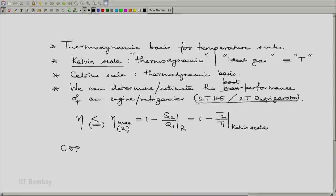Similarly, the coefficient of performance of any refrigerator based on the 2T refrigerator is going to be less than or in the thermodynamic limit equal to the COP maximum, which for a reversible refrigerator equals Q2 by W, which is Q2 divided by Q1 minus Q2, which will be T2 divided by T1 minus T2.